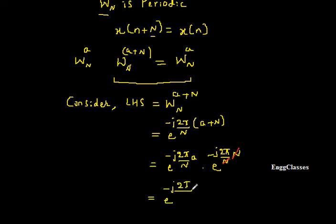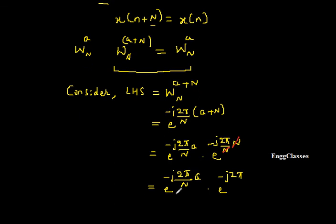After cancellation, we are left with e to the power (minus j 2π divided by N) to the power a, multiplied by e to the power (minus j 2π). The first part is already Wn to the power a, which is what we want. So we just need to show that e to the power (minus j 2π) equals 1.